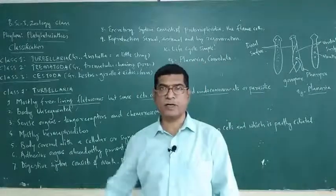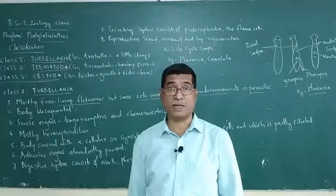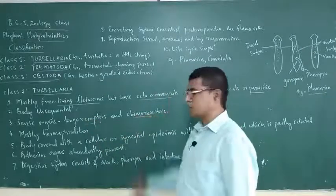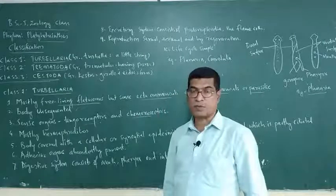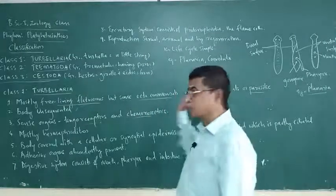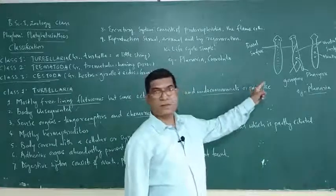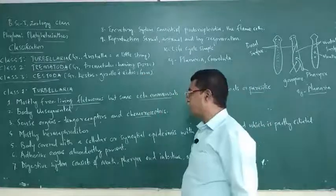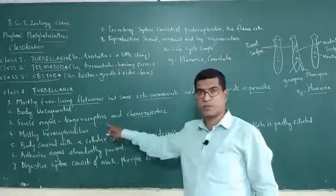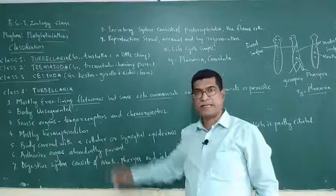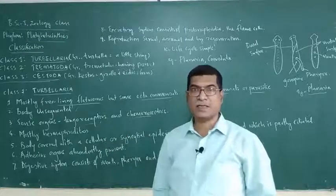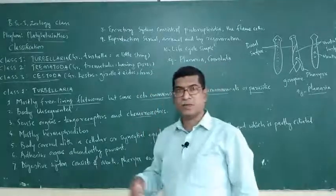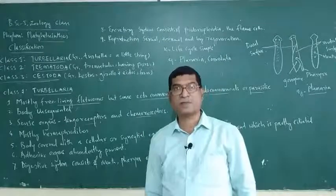Sense organs are present, as we already discussed in the general characters of Phylum Platyhelminthes. Tangoreceptors are present, chemoreceptors are present. In free-living forms, eyespots are there. Parasitic forms may have tangoreceptors and chemoreceptors — receptors which receive the sense of touch and pressure, whereas chemoreceptors receive the sense of chemicals.